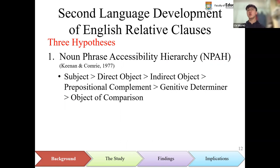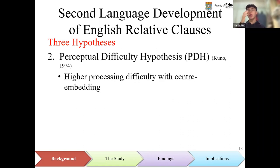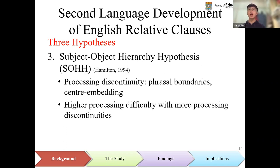On the basis of different second language learning theories, three hypotheses have been put forward to explain second language development of English relative clauses. The noun-phrase accessibility hierarchy argues that syntactic roles higher in the hierarchy are more accessible to be relativized, so relative clauses with relativized elements higher in the hierarchy are developed earlier by learners. The perceptual difficulty hypothesis argues that relative clauses involving center embedding are perceptually more difficult and therefore developed later compared to those involving right embedding. The subject-object hierarchy hypothesis draws upon the concept of processing discontinuity created by phrasal boundaries and center embedding to explain second language development of English relative clauses, with the number of processing discontinuities directly proportional to processing difficulty.